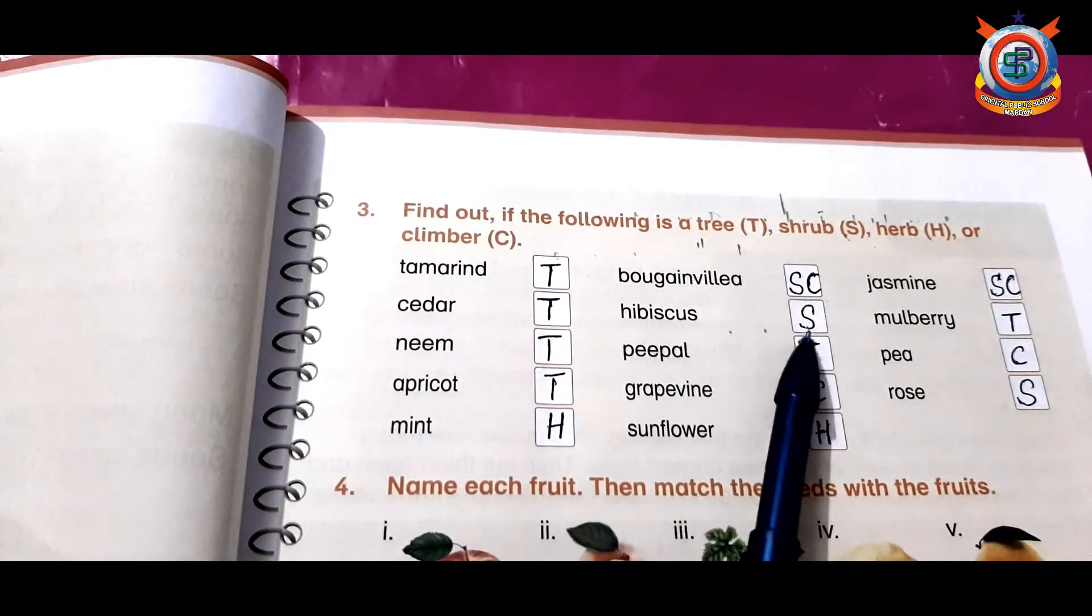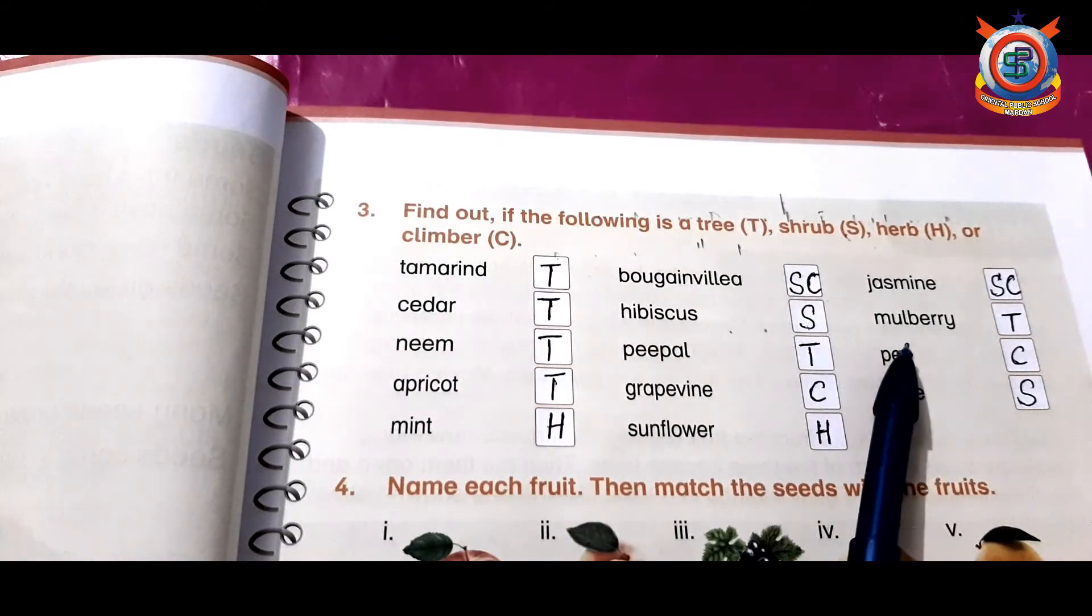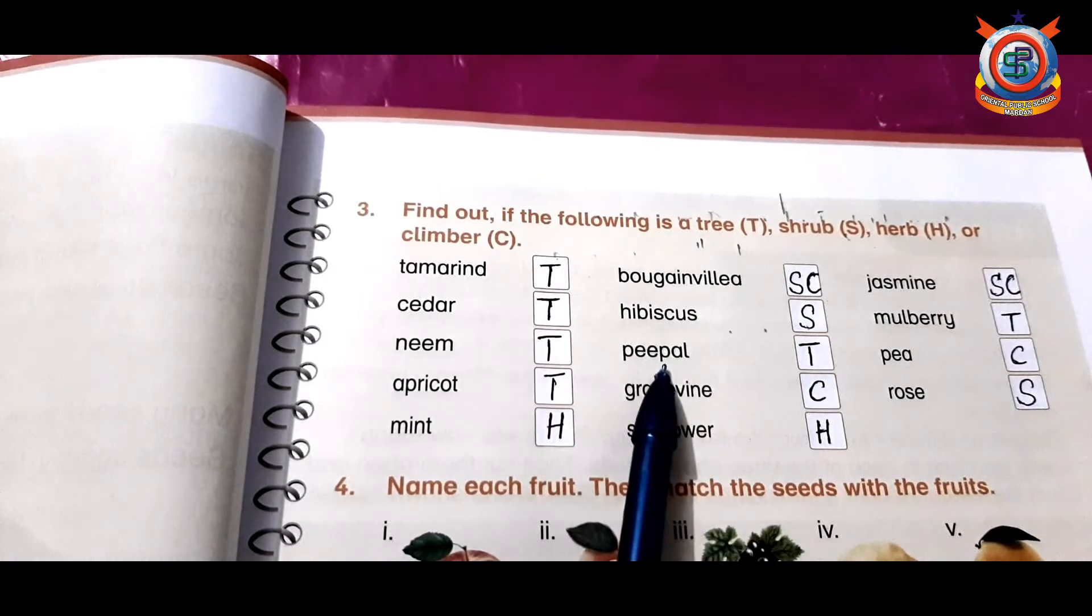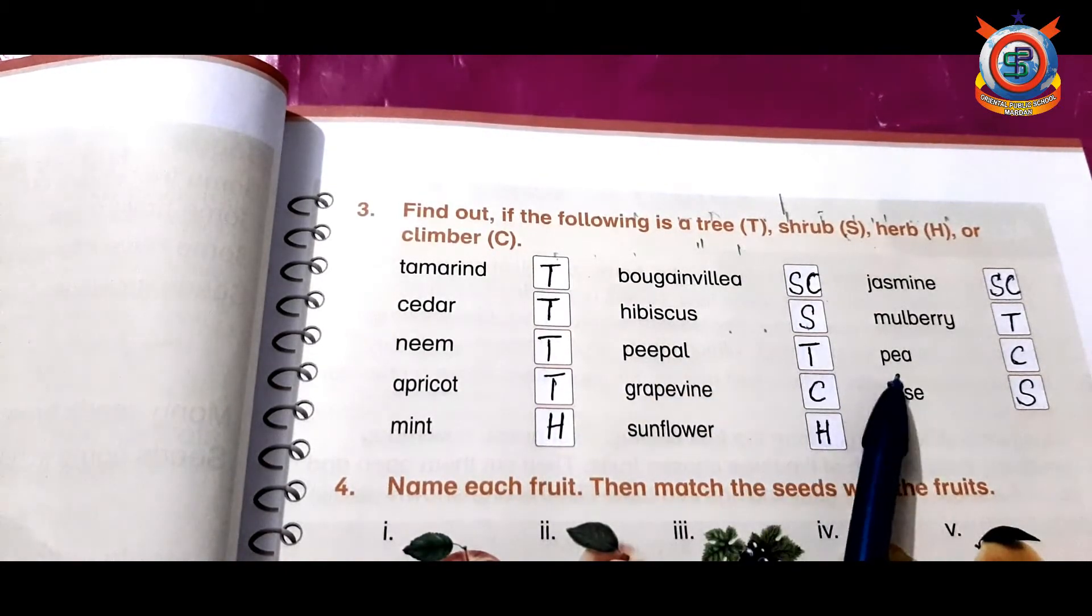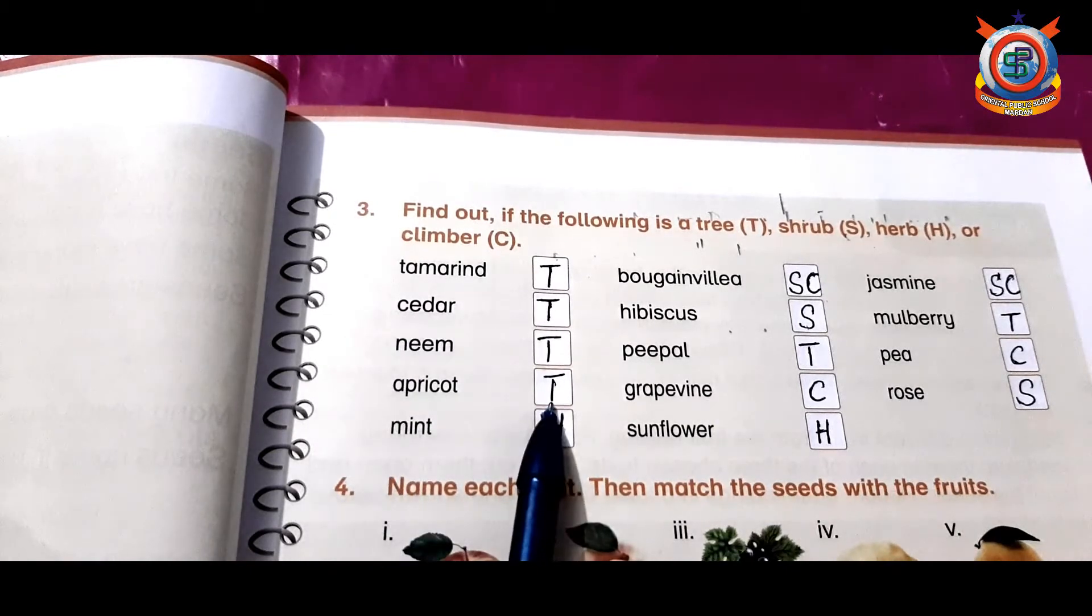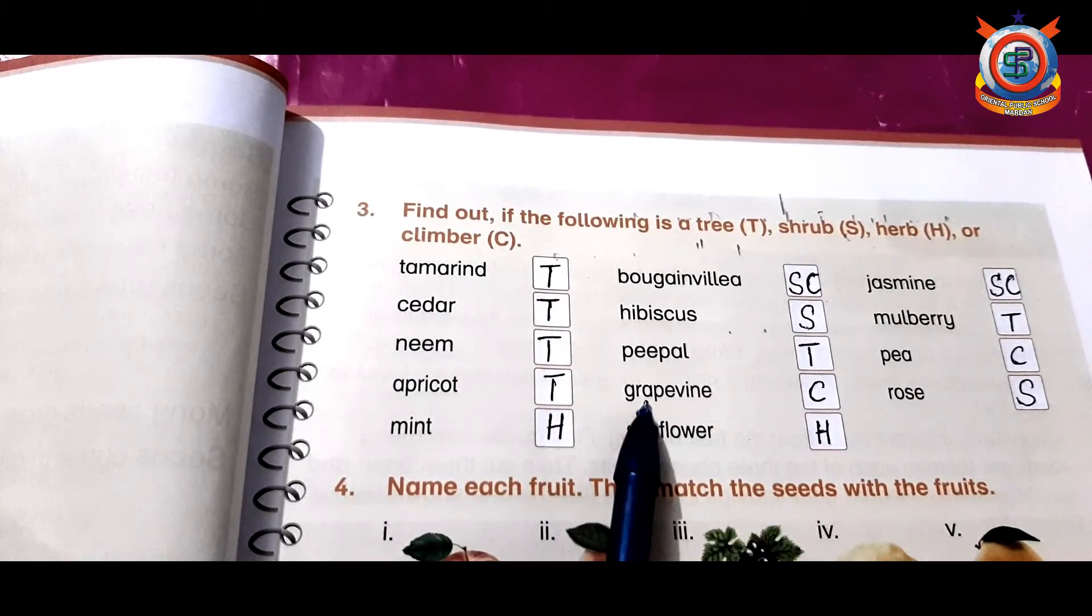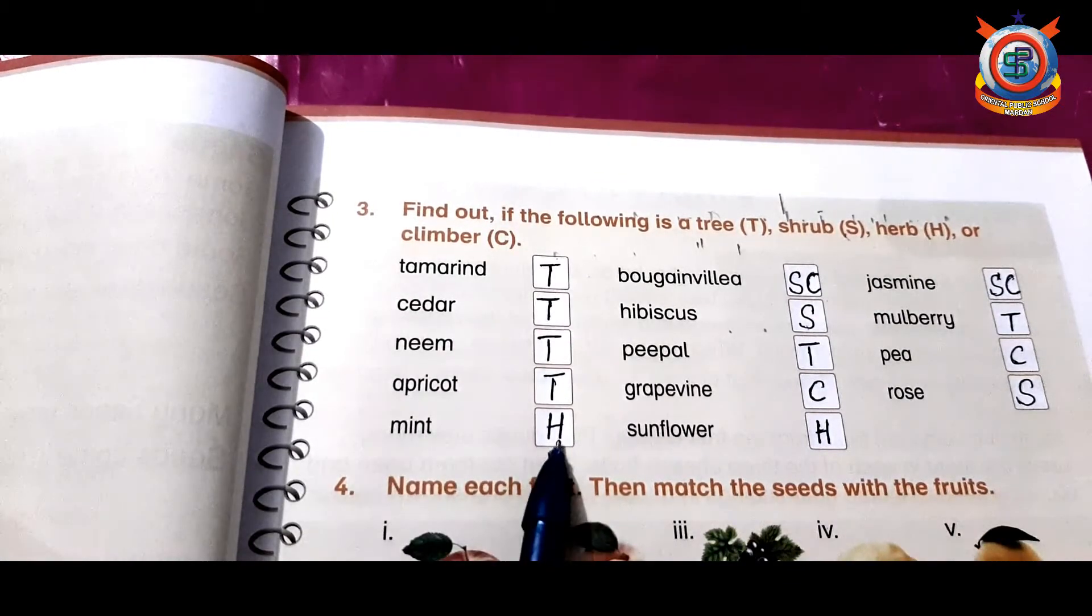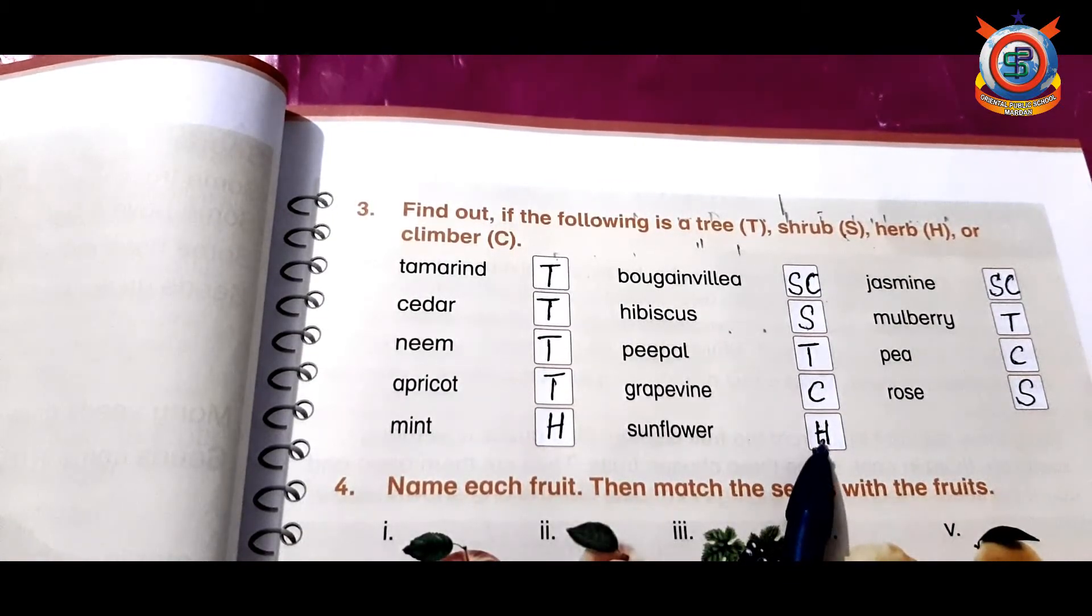Hibiscus: it is a shrub. Mulberry: it is a tree. Neem kadrakht: it is a tree. Peepul: it is a tree. Pea: climber. Apricot: it is a tree. Grapevine: climber. Rose: shrub. Mint: herb. Sunflower: it is a herb because sunflowers have green stems.